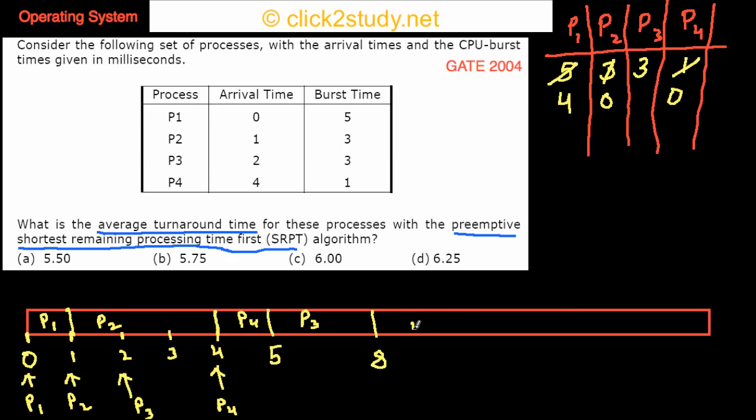And then we are left with P1, that means P1 will run up till 12, and with that finally this is the stop. This is the end out here. We'll stop here. So we have all these things and then let's find the average turnaround time.